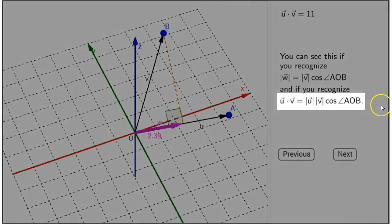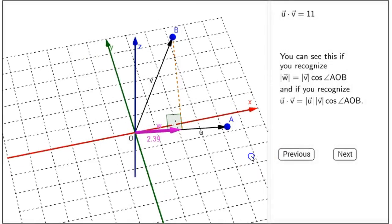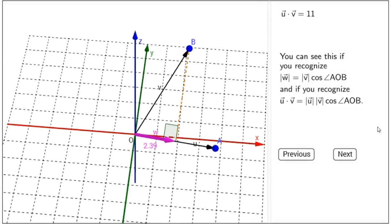Also, you recognize that U dot V equals the length of U times the length of V times cosine of angle AOB. Now, that is not immediately apparent. That fact was proven previously and the proof of that equation relies on the law of cosines. So, we will accept that as true and we recognize that both of these equations are true.